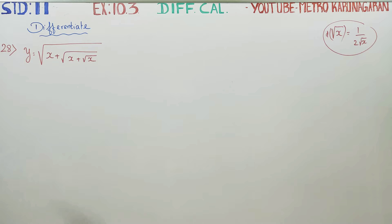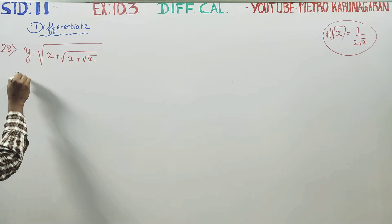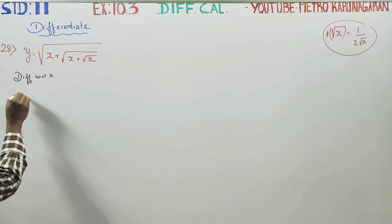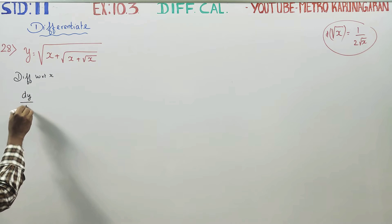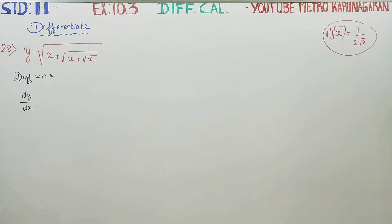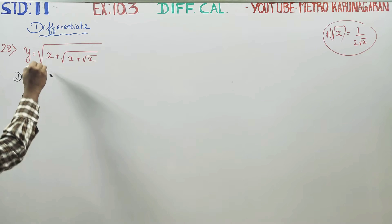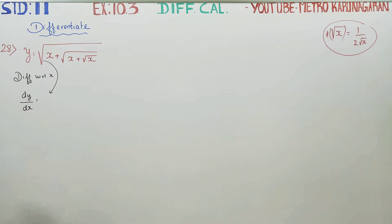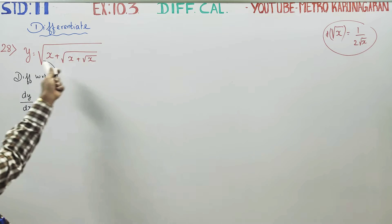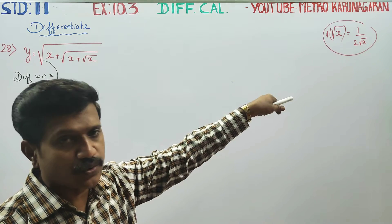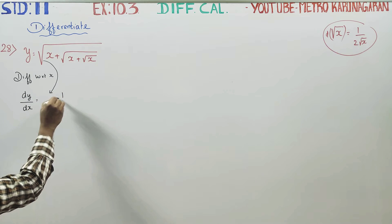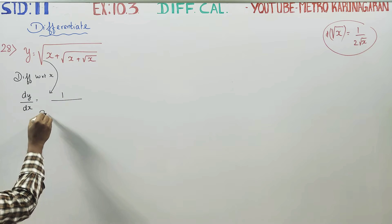We will start differentiating with respect to x. Differentiate with respect to x. dy by dx. First, root x is the only differentiation — all the functions of x give 1 by 2 root x.